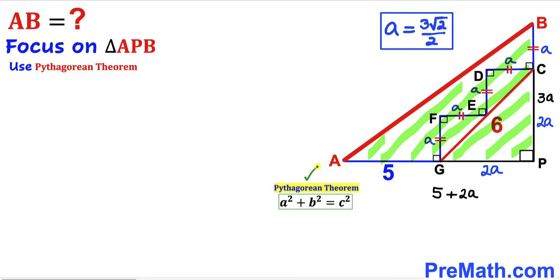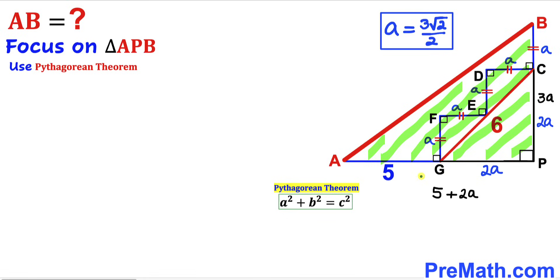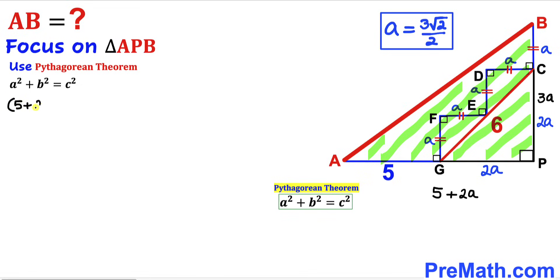We are going to apply the Pythagorean theorem on this triangle. Our Pythagorean theorem is A² + B² = C². In our case AB is the hypotenuse, and the two other legs are (5 + 2a) and 3a. So: (5 + 2a)² + (3a)² = AB².